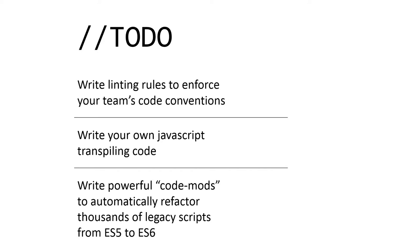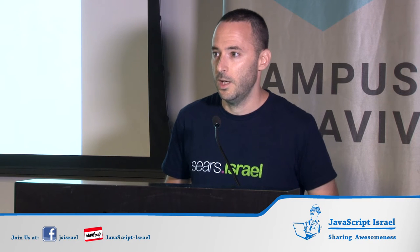We're going to talk about how to write your own linting rules to enforce your team's code conventions or find errors in your code as part of your build process. You can write your own JavaScript transpiling code — write beautiful JavaScript without boilerplate and still have it run anywhere, even if older browsers don't support the new syntax. We'll also cover code mods, programs that run over your code and refactor it — for example, transforming thousands of files from ES5 into ES6.